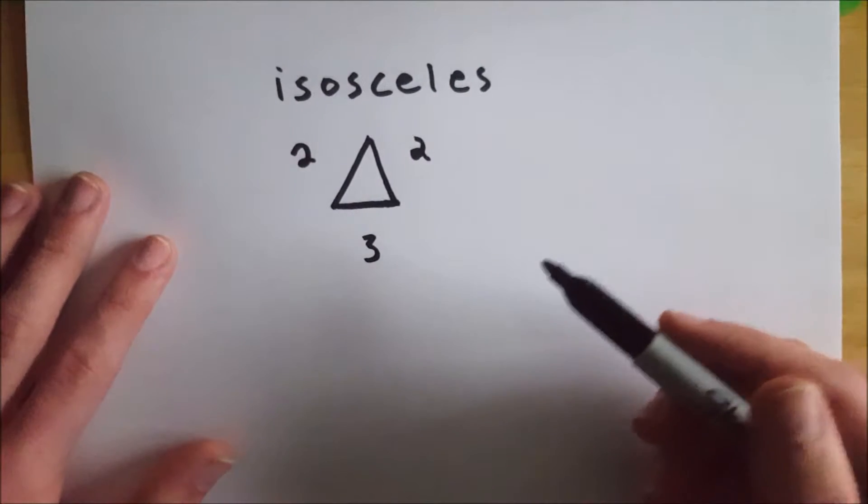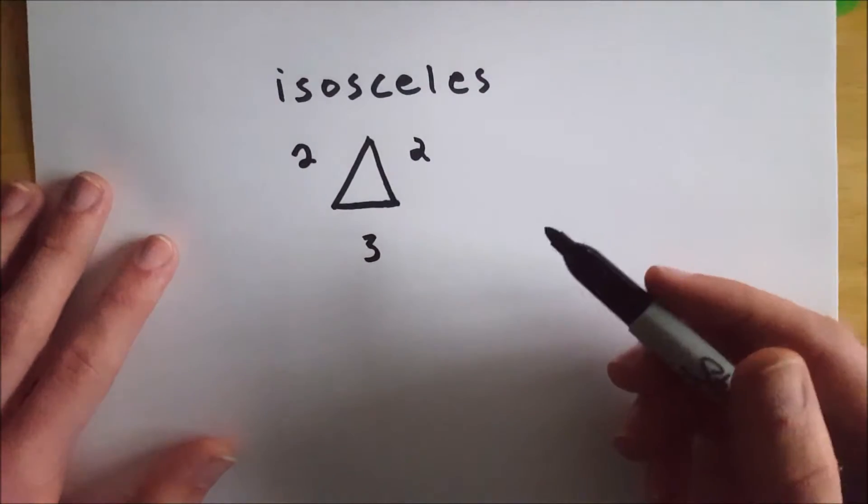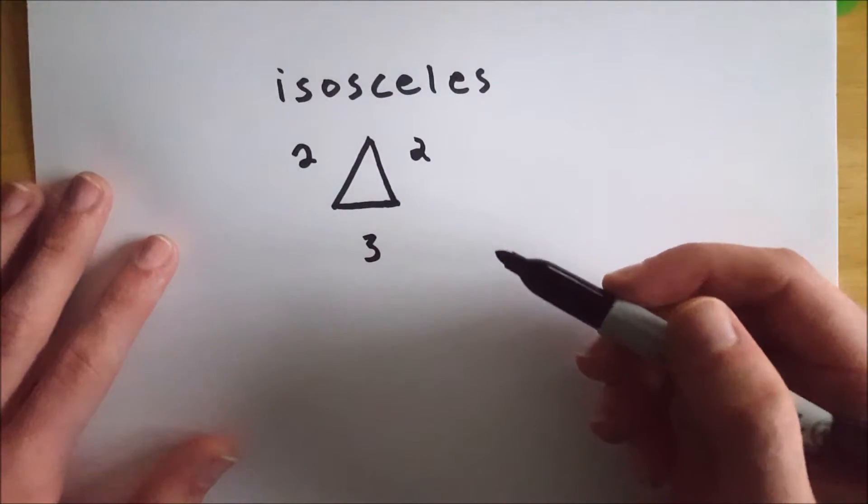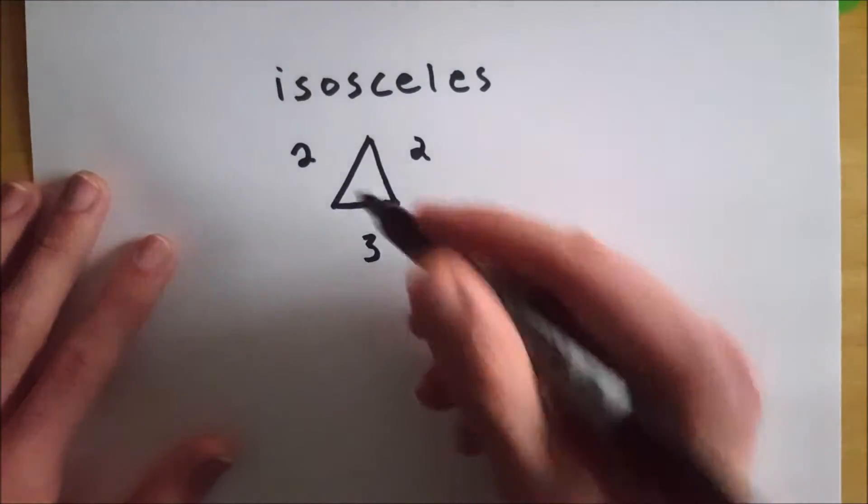Therefore, this triangle is isosceles, or isosceles, as you might be saying now. I know it's cheesy. It's terrible. I'll stop.